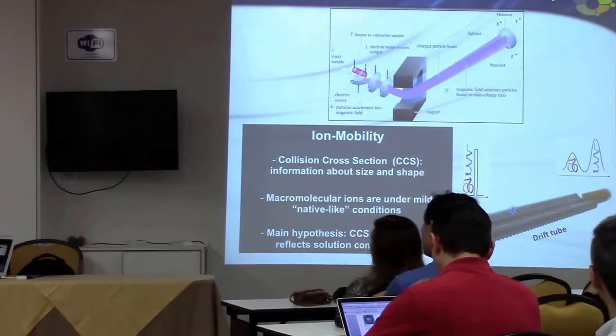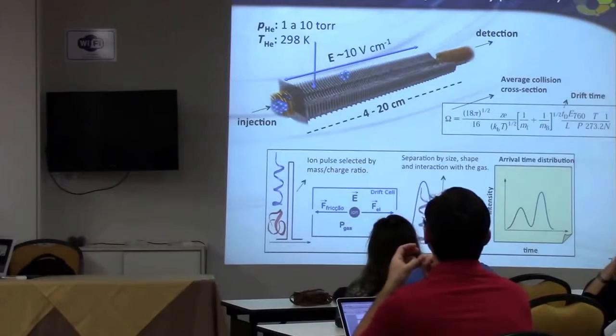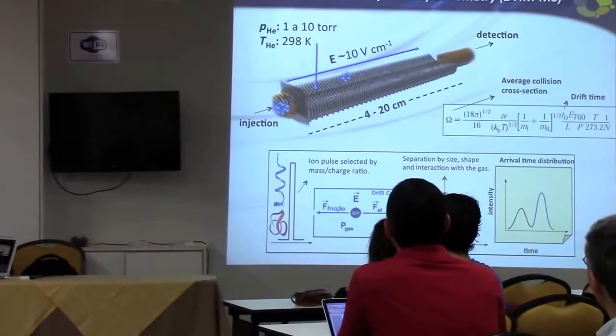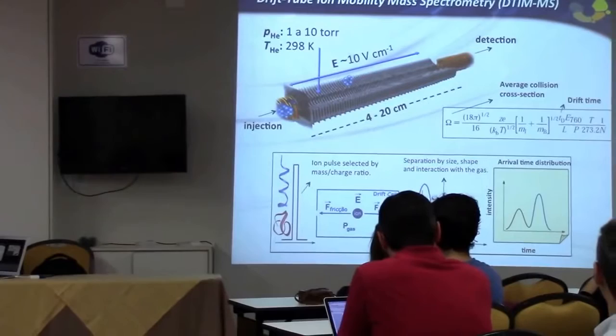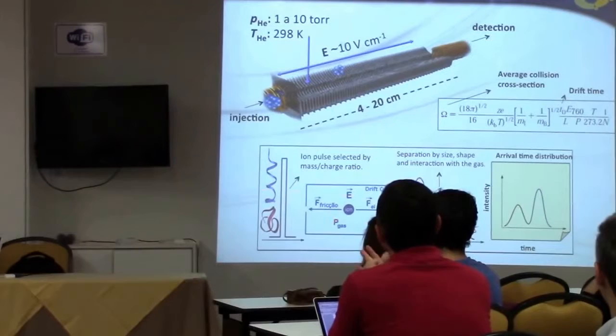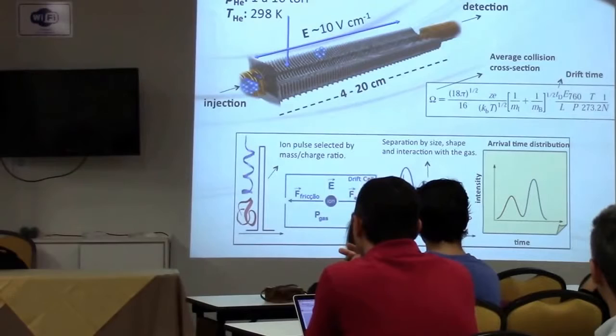These proteins are charged — they have a net charge, and sometimes not just a single charge type but a charge distribution. They can be zwitterionic. You have a drift tube with an applied electric field and gas under certain temperature and pressure conditions. You submit the protein ions and detect them at the end, and looking at the drift time, you conclude the average collision cross-section. The friction due to the gas and the acceleration of the ions allows you to separate according to size, shape, and interaction with the gas. It's very important to interpret this data to understand what cross-section corresponds to what structure.